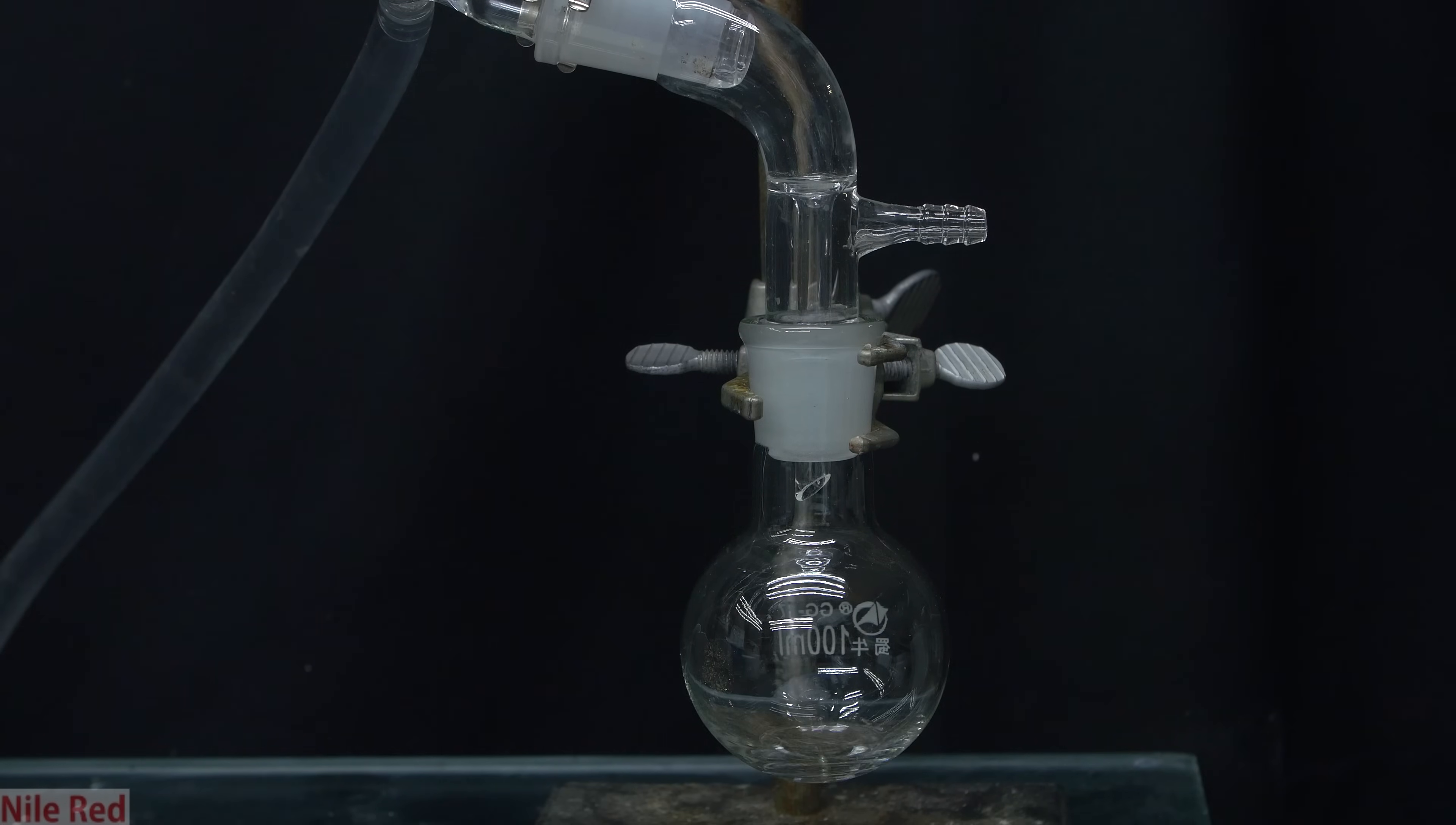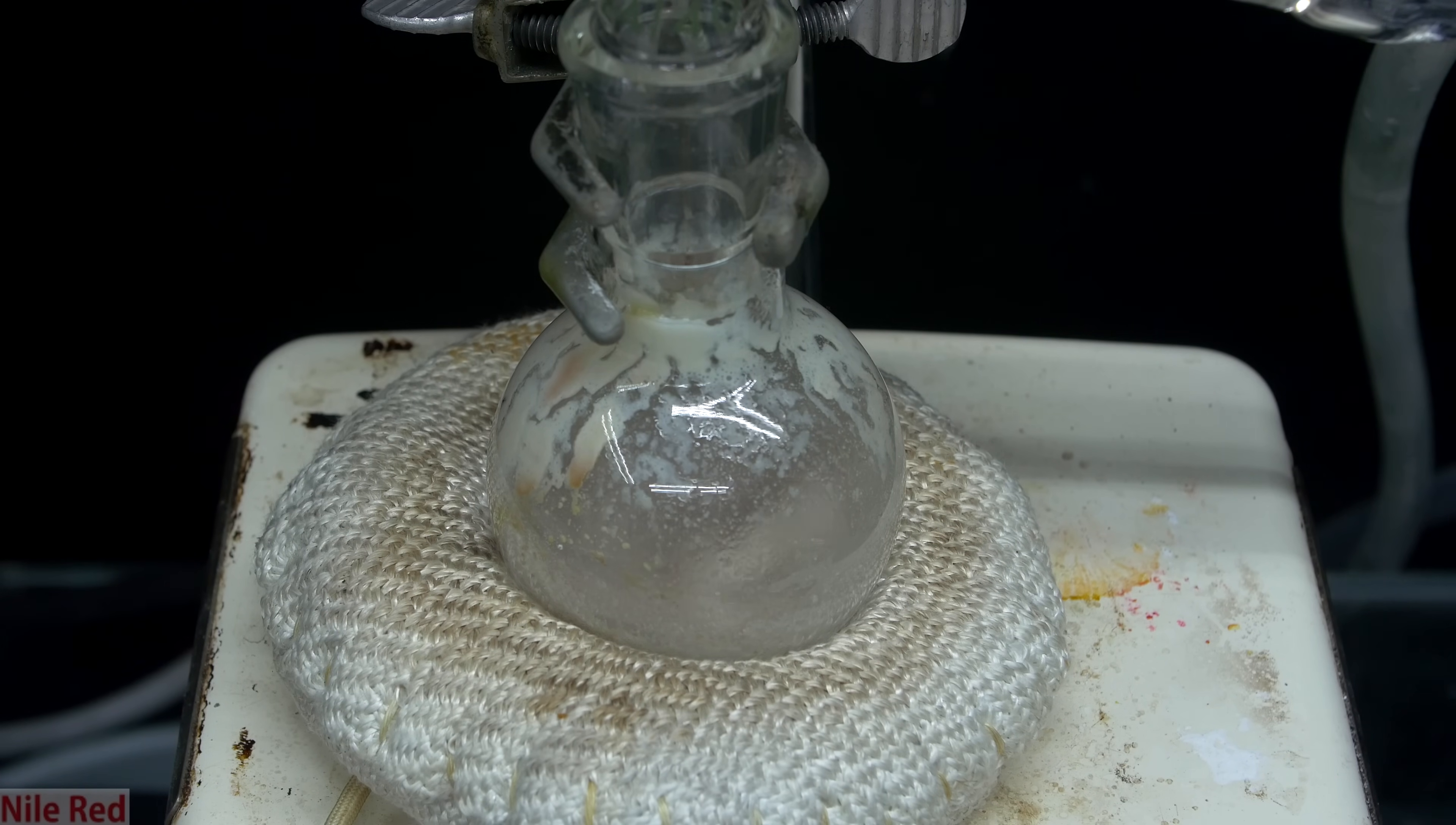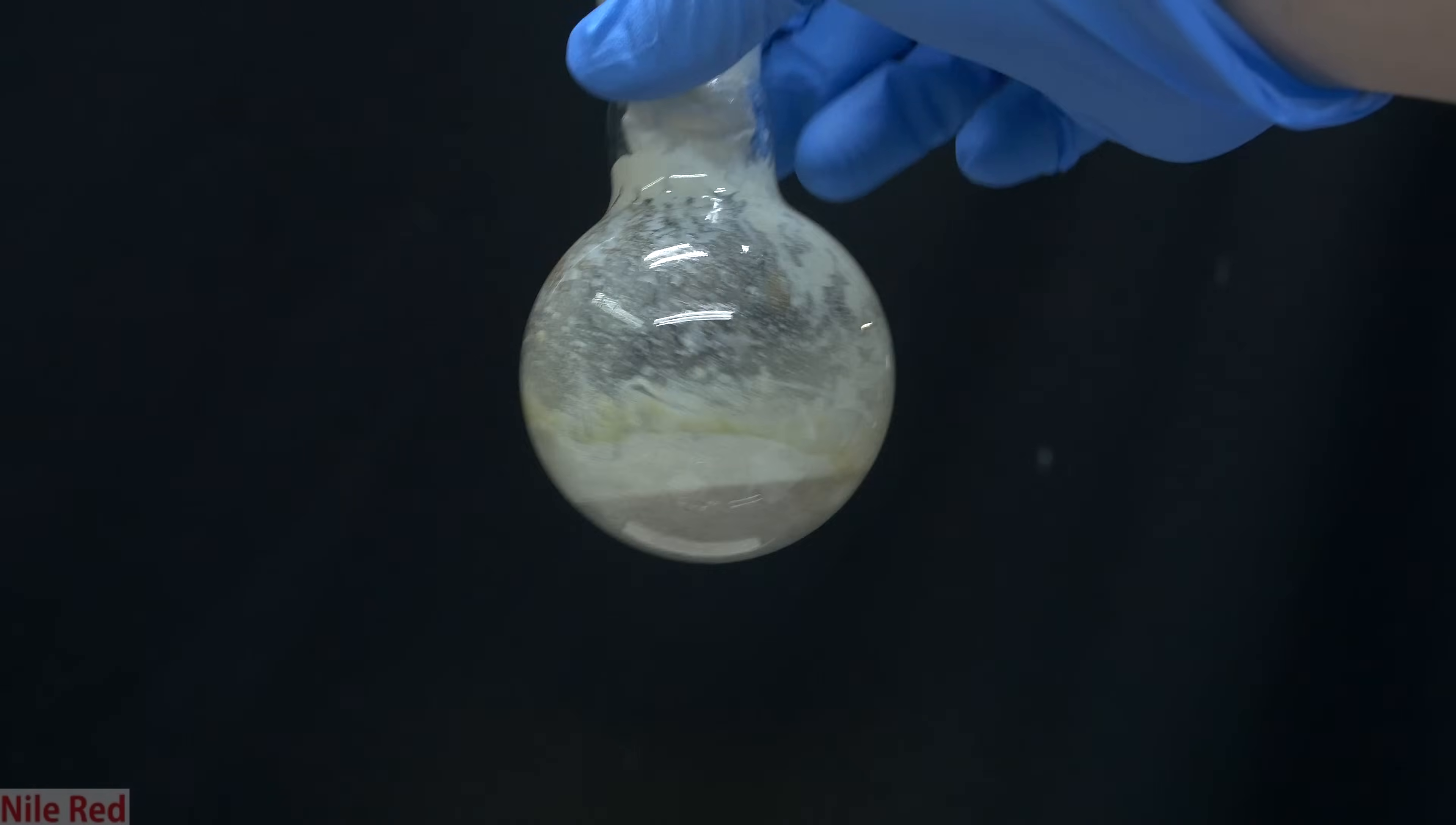We start to get some very nice crystal clear distillate coming over into the receiving flask. The boiling point of pyridine is around 115C, and everything that came over was between 110 and 115, indicating there wasn't too much water present. When it seemed like there wasn't much left in the distilling flask, and stuff stopped coming over, the heat was turned off. In the receiving flask we were left with some nice crystal clear liquid, and in the distilling flask we were left with a solid residue.